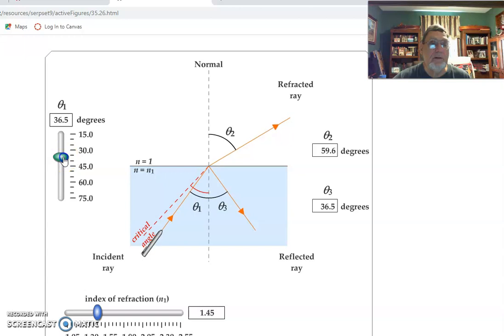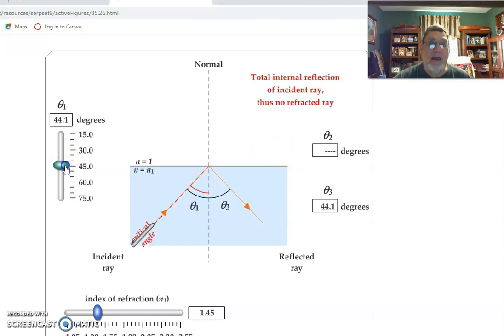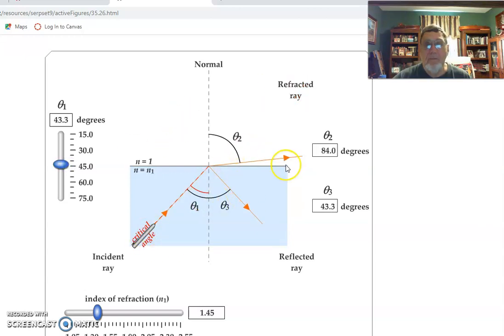until at some point it's actually 90 degrees. It's real close, so if you move it anymore, it's going to reflect along the surface so none of it really gets out.